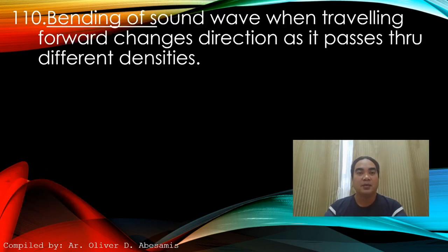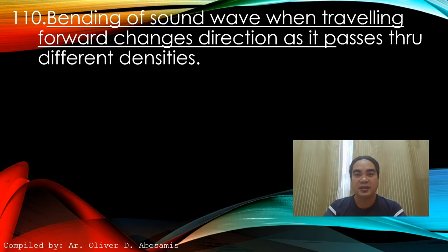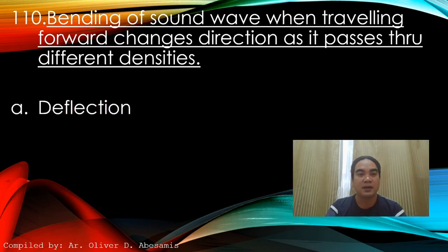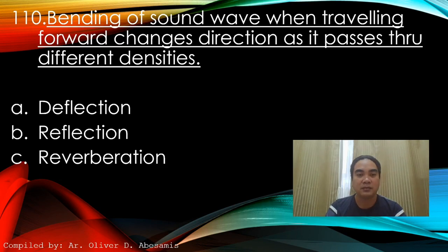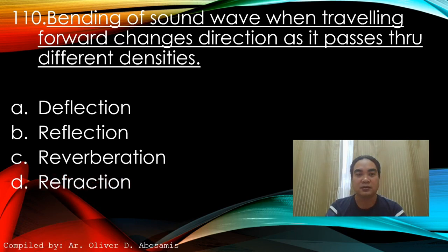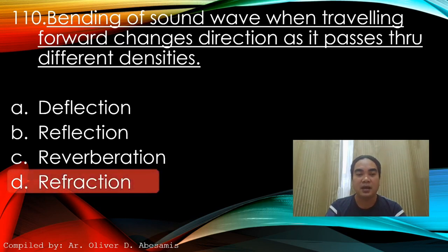Question 110: Bending of a sound wave — when traveling forward, it changes direction as it passes through different densities. A) Deflection, B) Reflection, C) Reverberation, D) Refraction. Answer: D) Refraction.